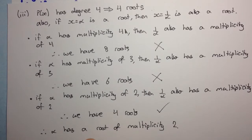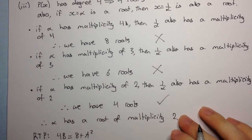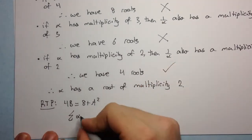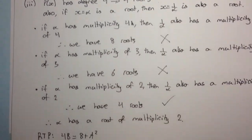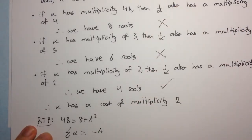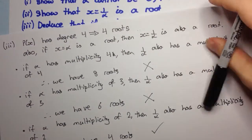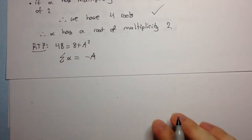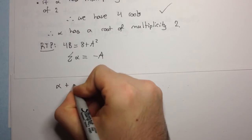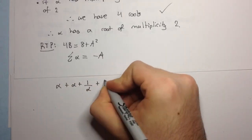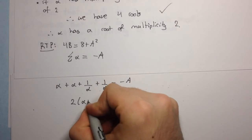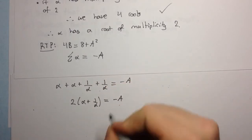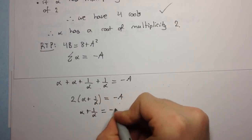If we consider the sum of roots one at a time, that equals minus the coefficient of x cubed over the leading coefficient, which is minus a over 1, so just minus a. Our sum of roots is alpha plus alpha plus 1 over alpha plus 1 over alpha, which equals 2 times (alpha + 1/alpha) = minus a. Therefore, alpha plus 1 over alpha equals minus a over 2.